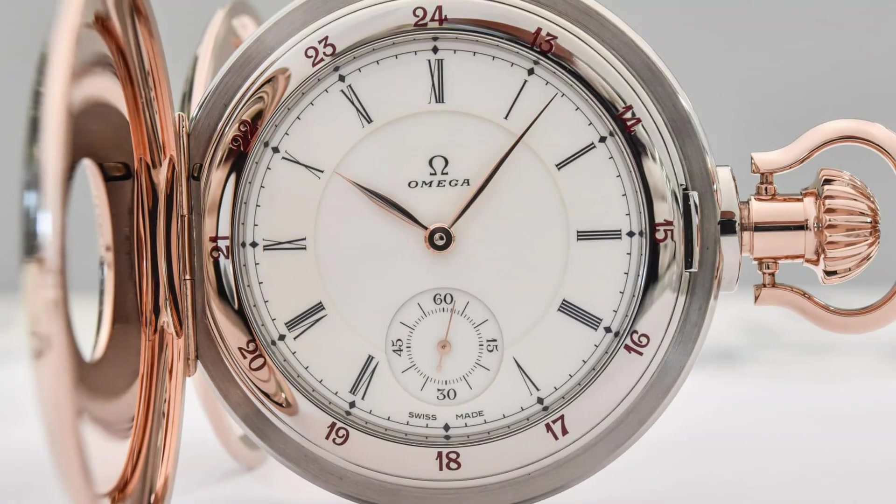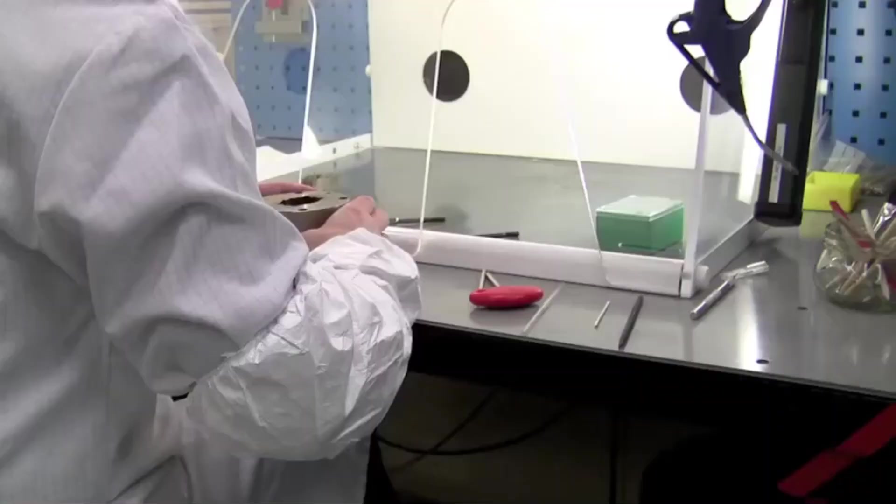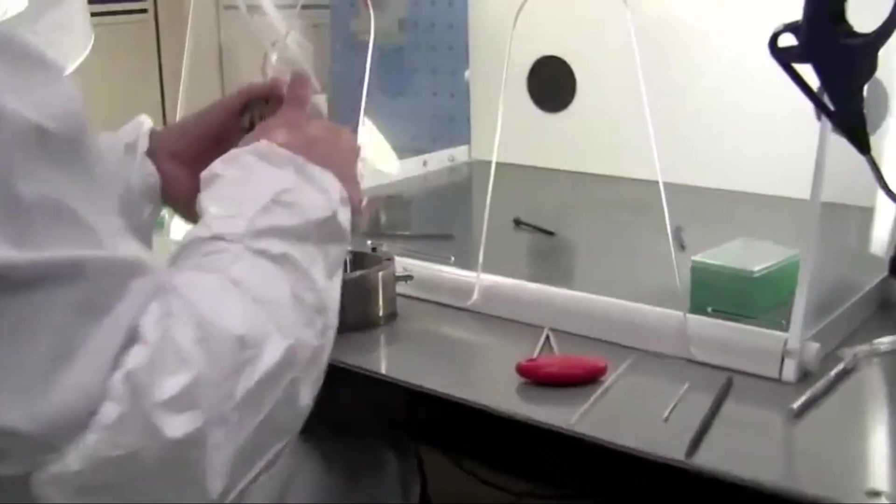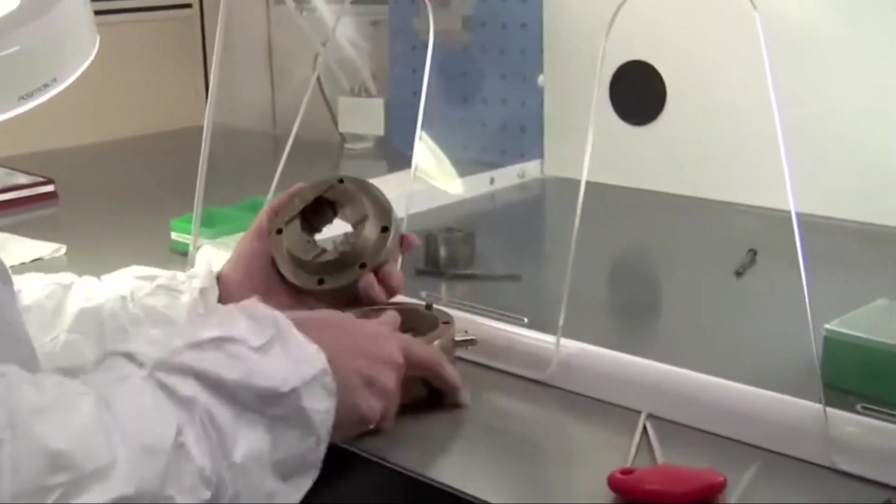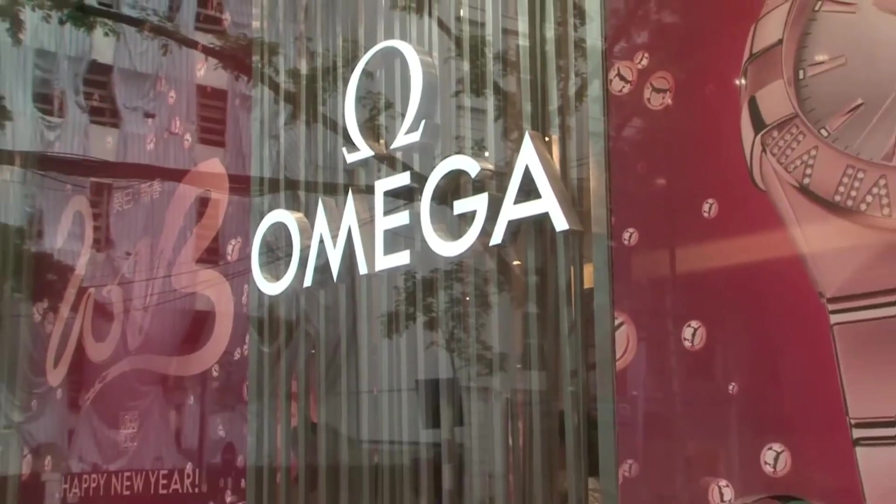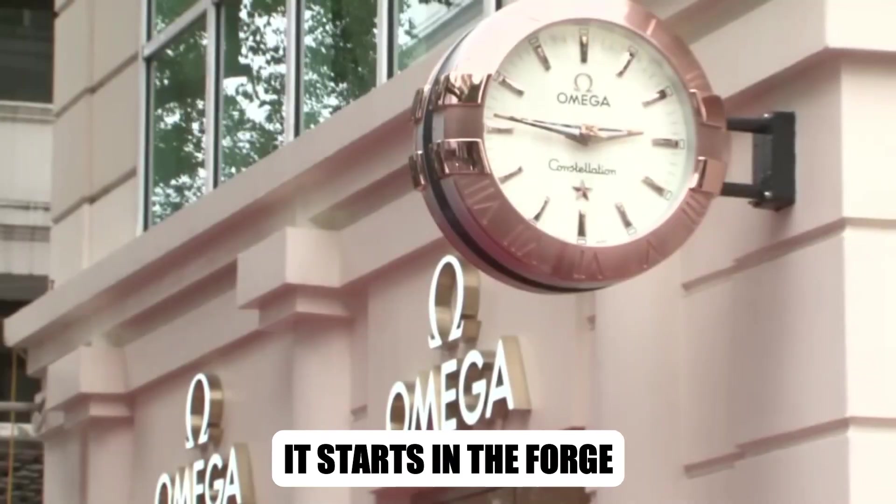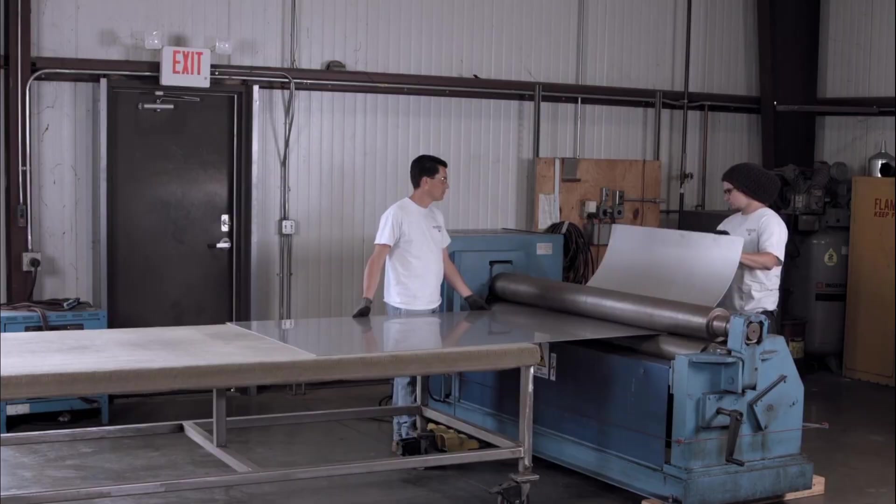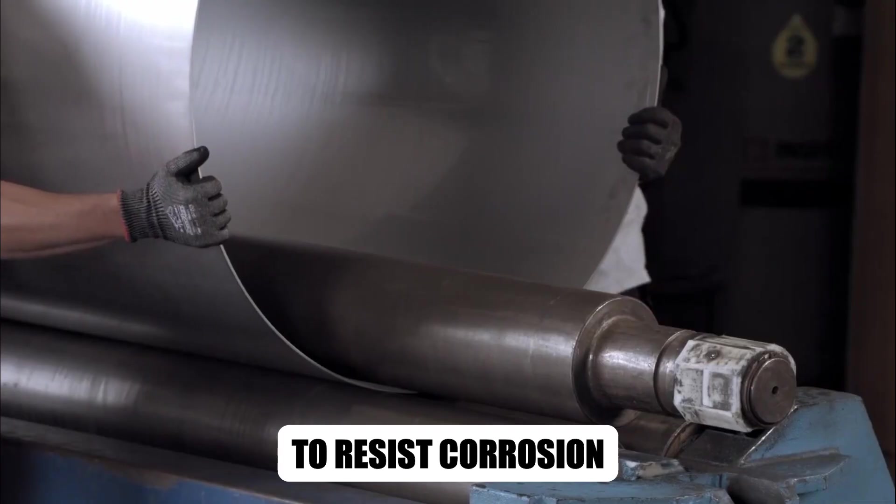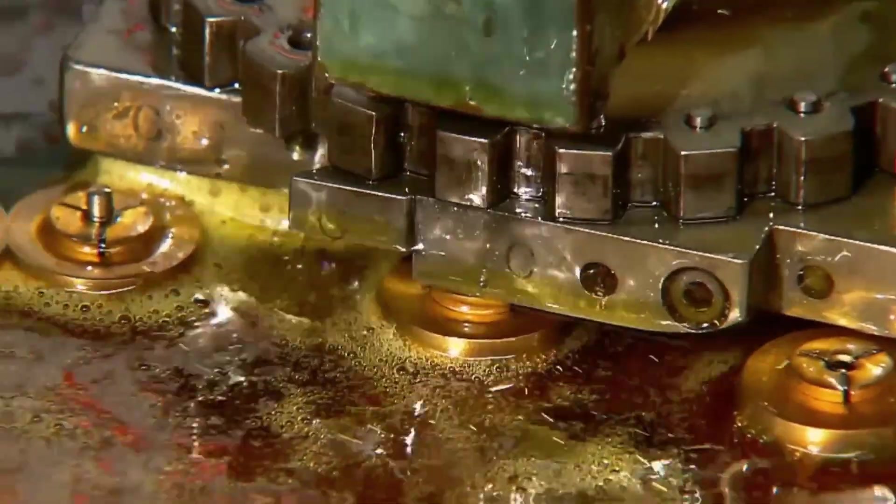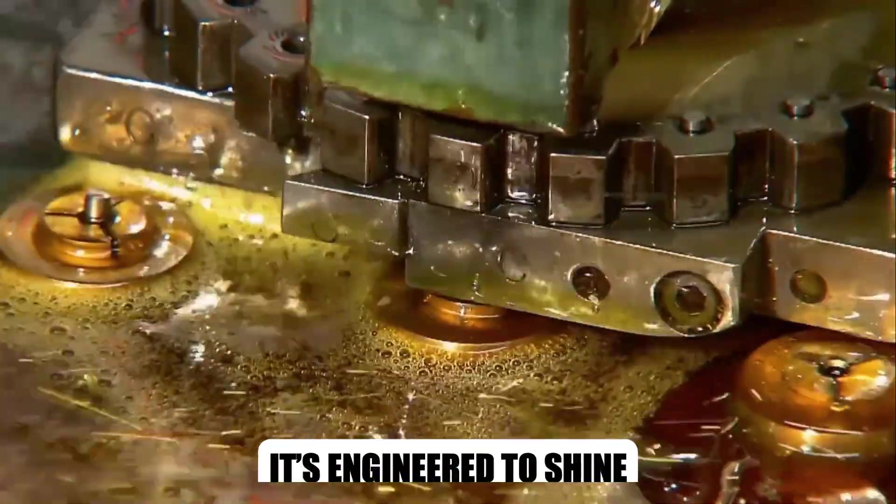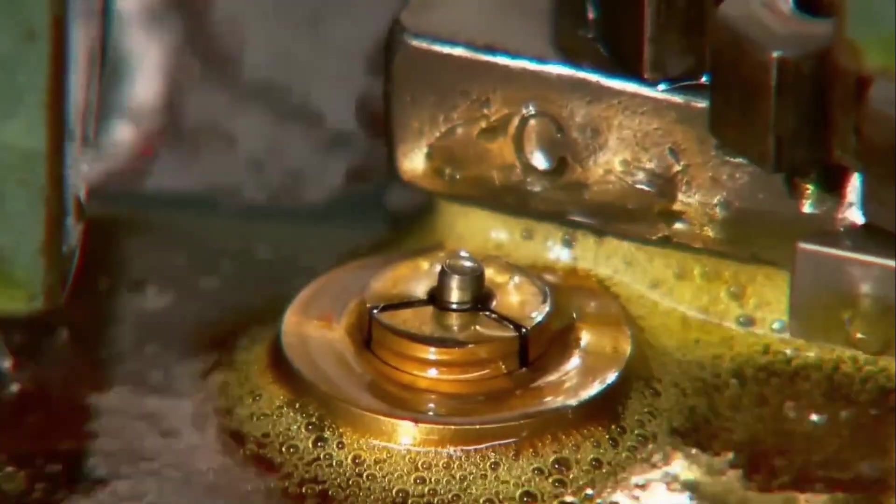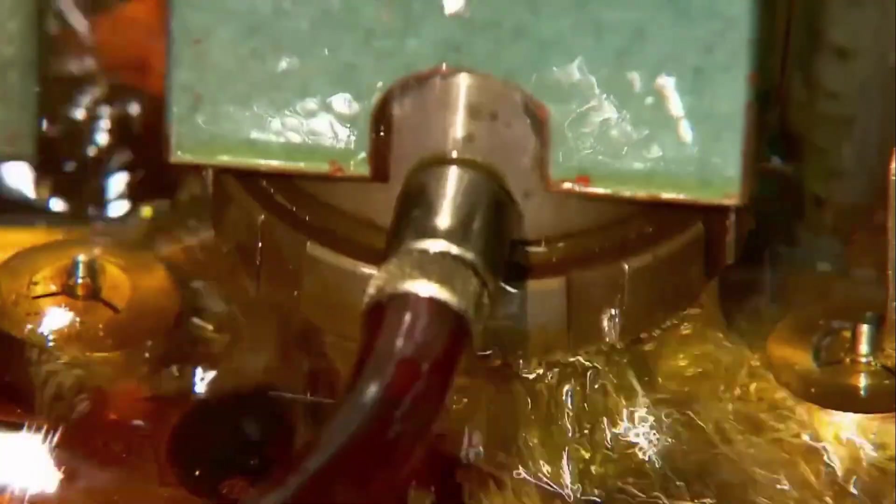Before a single gear turns or a dial is polished, Omega's journey begins with raw matter pulled from the earth. Luxury doesn't start in a boutique window, it starts in the forge. Blocks of stainless steel arrive at their facilities, chosen not just for strength, but for their ability to resist corrosion for decades. This isn't ordinary steel, it's engineered to shine, to endure, to carry the weight of precision.